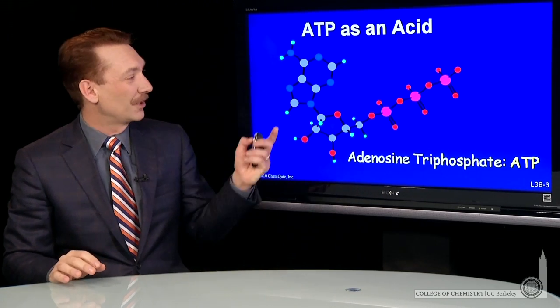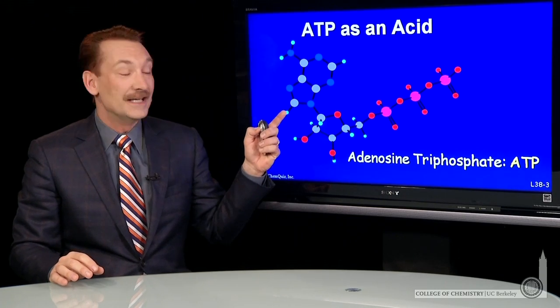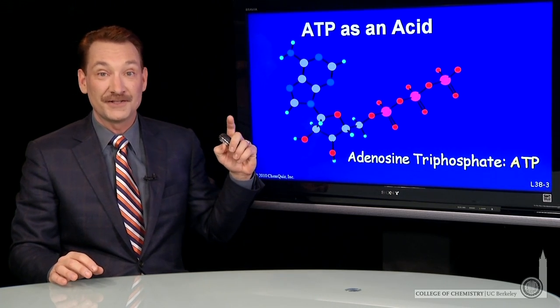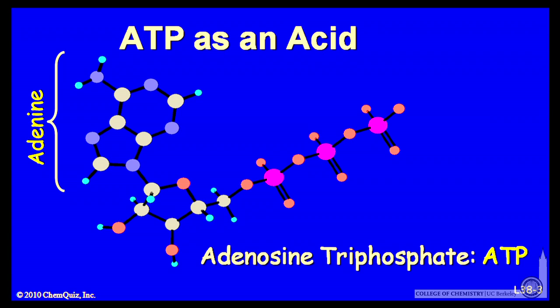So let's look at ATP more carefully. ATP is adenosine triphosphate. It's composed of a base, adenine - that's this component here - and a sugar, ribose, and you can see it's a five-carbon sugar, and three phosphates. So we have one, two, three phosphates.